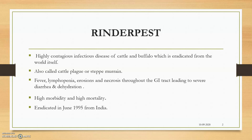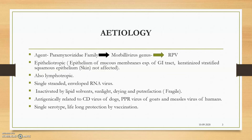Also called 'steppe murine,' this disease is characterized by fever, lymphopenia, erosions, and necrosis throughout the digestive tract, leading to severe diarrhea and dehydration. High morbidity and high mortality were hallmarks of this disease. It was eradicated in June 1995 from India.